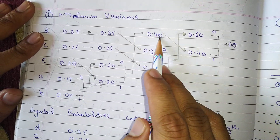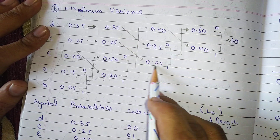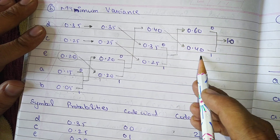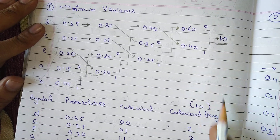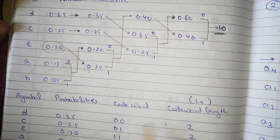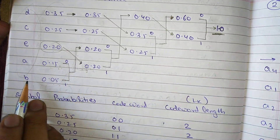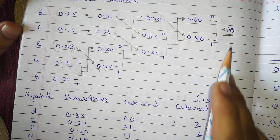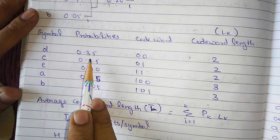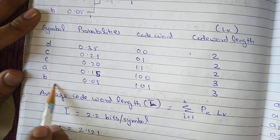Then 0.20 + 0.20 = 0.40, which is the highest, so it goes to the top, and 0.35 and others come down. Then 0.35 + 0.25 = 0.60, and finally the addition gives 1. Remember: this final answer should always be 1, because this is a probability distribution and all probabilities must sum to 1.